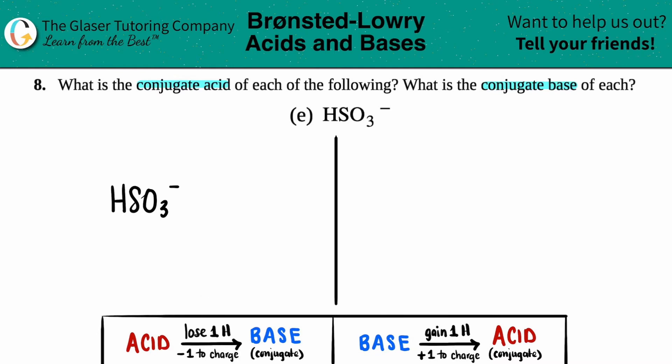So all you got to do is just lose one hydrogen. Find the hydrogen and get rid of it. So in this case, there was only one hydrogen. So boom, goodbye. All the other elements come along for the ride. So it's just SO3 now.